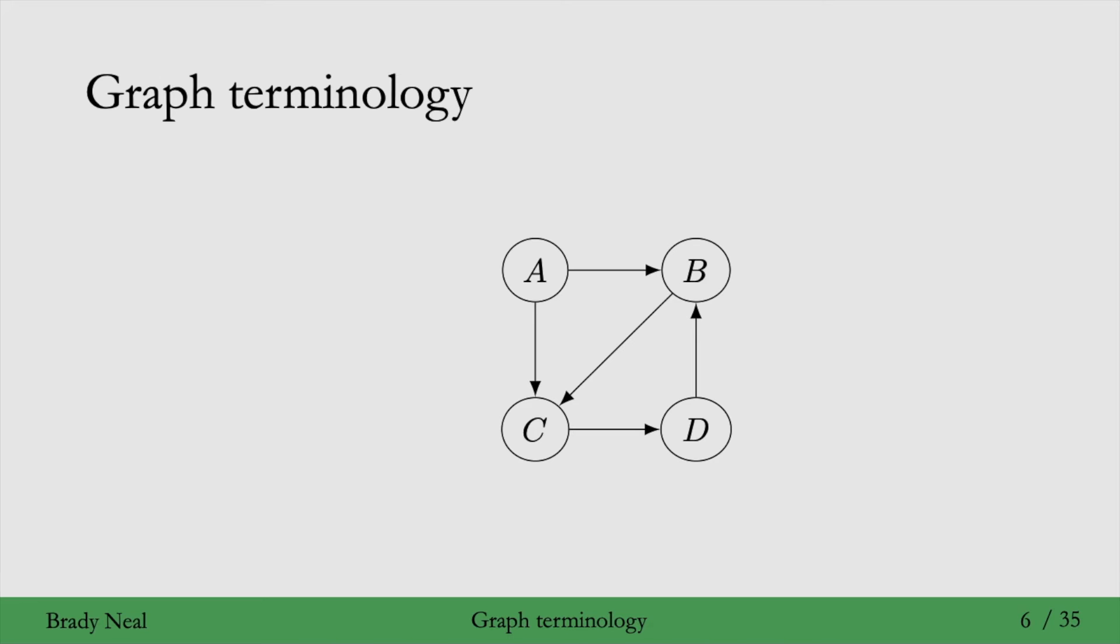If we add this directed edge D to B, then we have a cycle. In this course we'll almost exclusively be looking at graphs without cycles. So those are called directed acyclic graphs, or DAG for short.